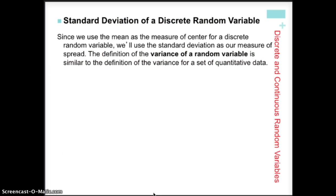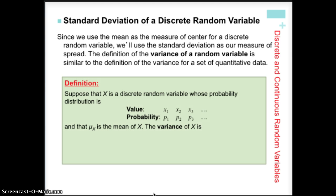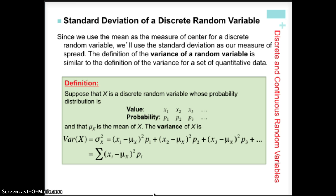Now let's look at the standard deviation of a discrete random variable. Standard deviation is the average difference between each individual value and the mean. First find the mean — the expected value. Then find the variance: take the difference between each value and the mean, square the difference, multiply by the associated probability for that value, and add them all together. That gives us the variance. The standard deviation is the square root of the variance.